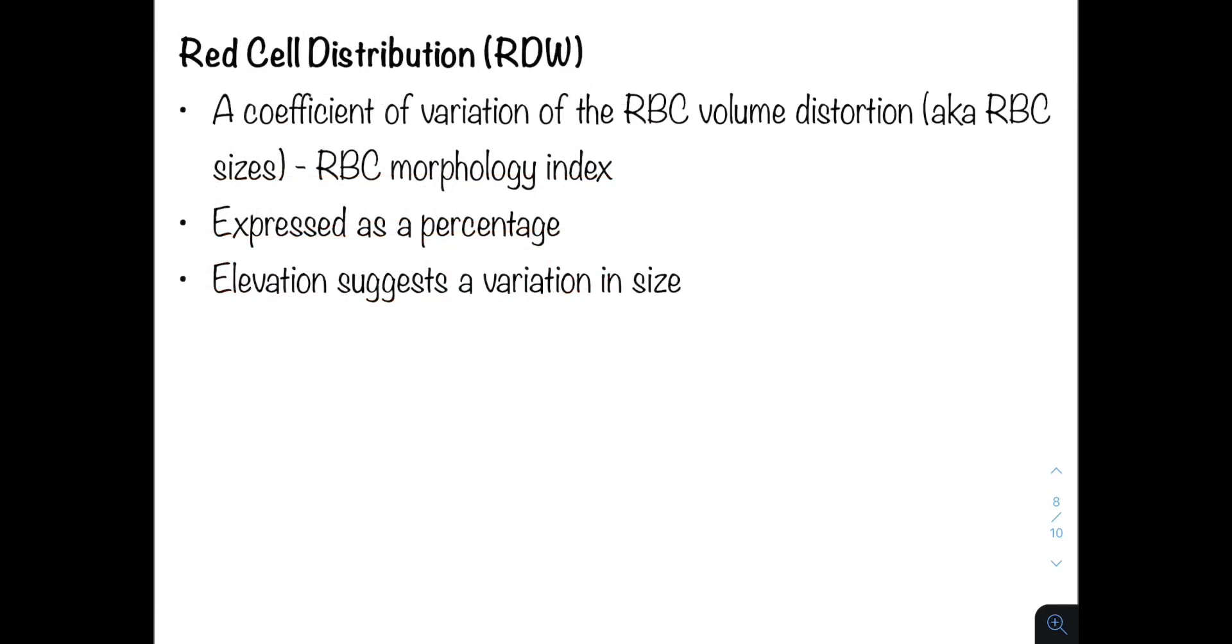And finally we have the RDW or the red cell distribution width. This is a measure of red cell morphology and is expressed as a percentage. So it lets us know if the red blood cells are of similar size. Now an elevation in the RDW suggests that there is variation in the size of the red cell, which means that there is an underlying pathology that needs to be investigated.